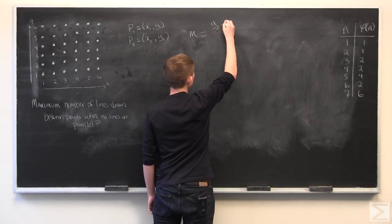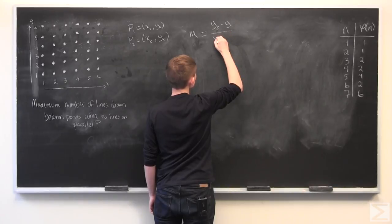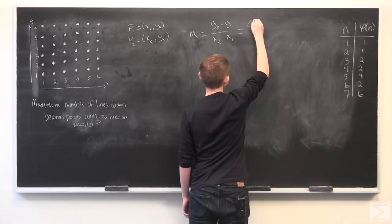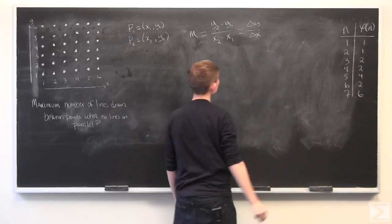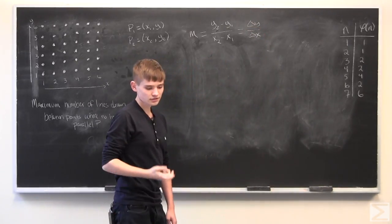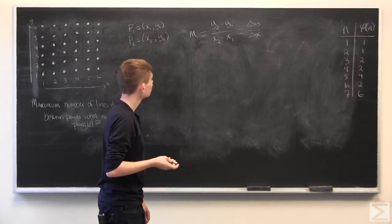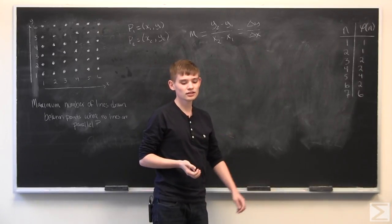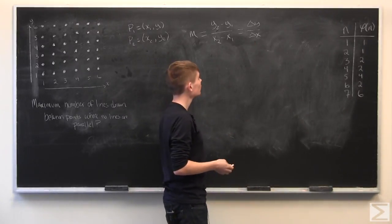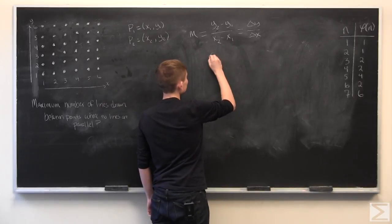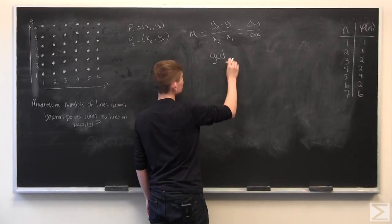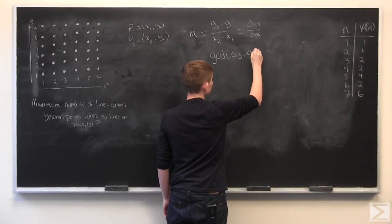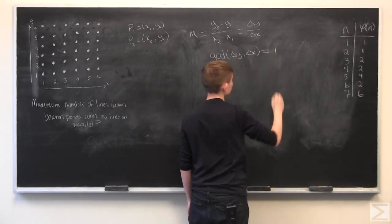It's just y2 minus y1 over x2 minus x1, which is delta y over delta x. Now, if we want unique slopes, we want delta y over delta x to be in its lowest common factor. Which, mathematically speaking, means that we only want slopes where delta x and delta y have a greatest common factor of one.